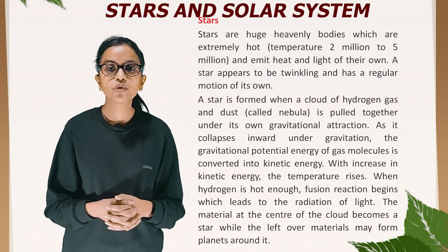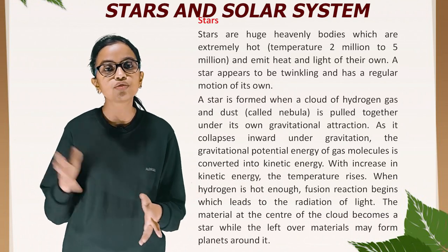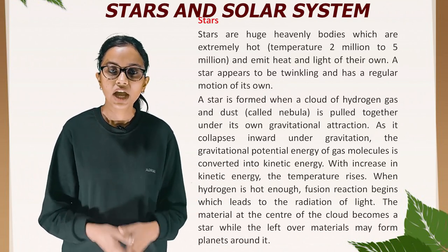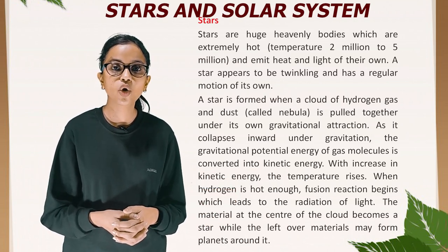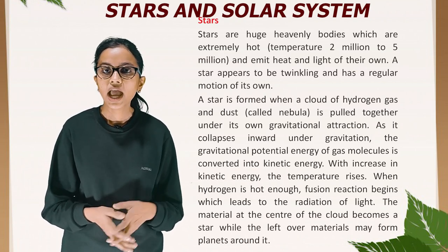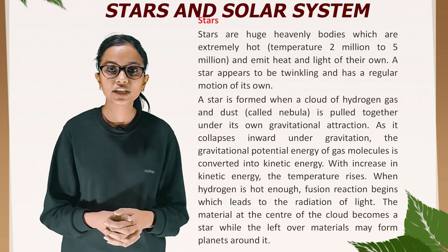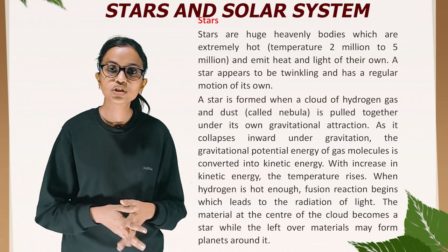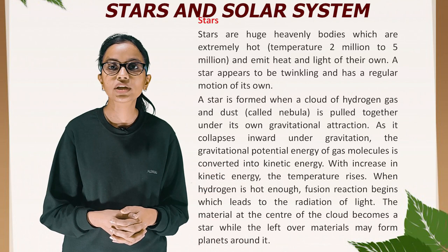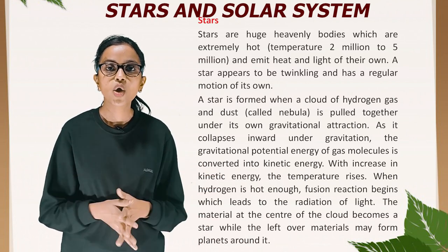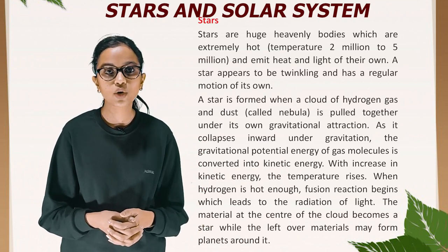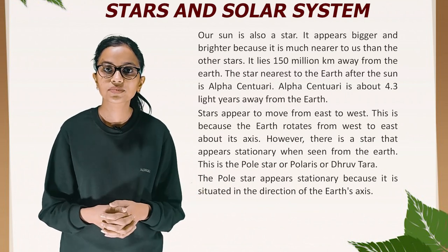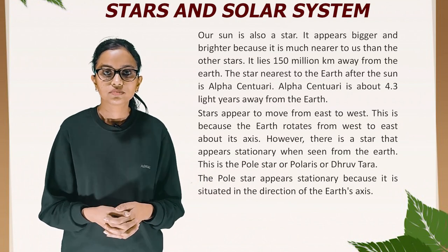Stars are huge heavenly bodies which are extremely hot — temperatures between 2 million and 5 million degrees — and emit heat and light of their own. A star is formed when a cloud of hydrogen gas and dust called a nebula is pulled together under its own gravitational attraction. As it collapses inward, gravitational potential energy is converted into kinetic energy; with increases in kinetic energy the temperature rises. When hydrogen is hot enough, fusion reactions begin, leading to the radiation of light. The material at the center becomes a star, while leftover material may form planets around it. Our Sun is also a star; it appears bigger and brighter because it is much nearer to us, lying 150 million kilometers from Earth.